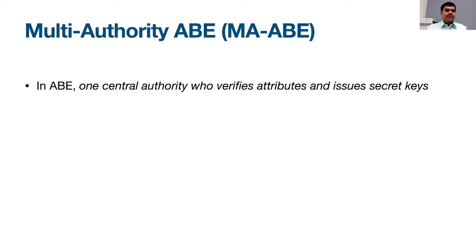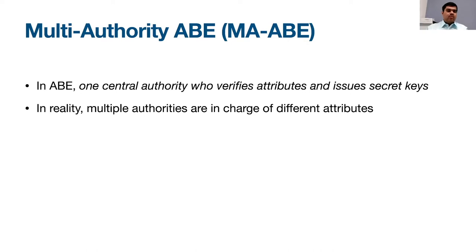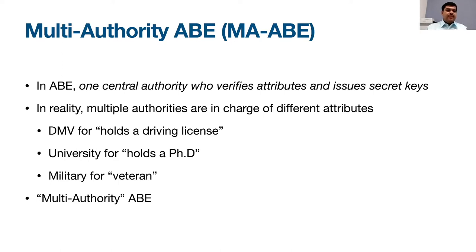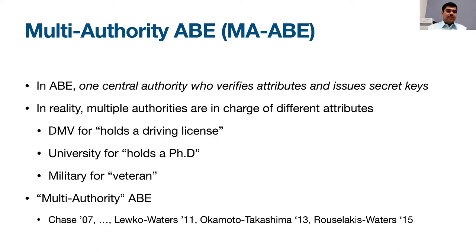We now turn our attention to an extended version of ABE called Multi-Authority ABE, or MA-ABE. In standard ABE, a central authority holds the master secret key and issues keys to all users. However, in reality there is no single authority controlling all attributes — different authorities control different attributes. For instance, the DMV controls attributes for driving licenses, universities control attributes for PhDs, and the military controls attributes for being a veteran. The MA-ABE primitive was introduced to handle this distributed nature, studied in works of Chase 2007, LW11, OT13, and others.